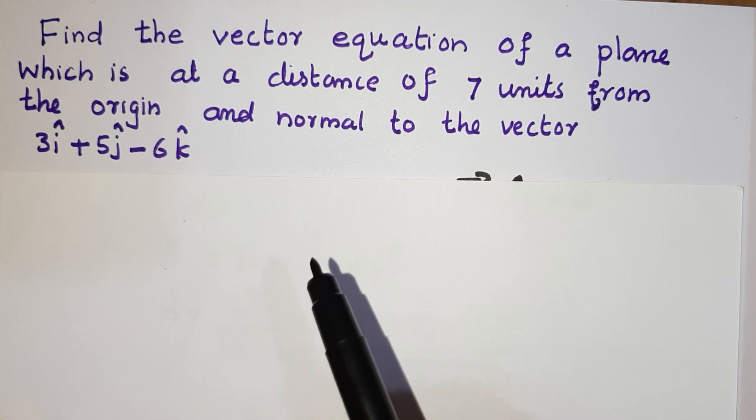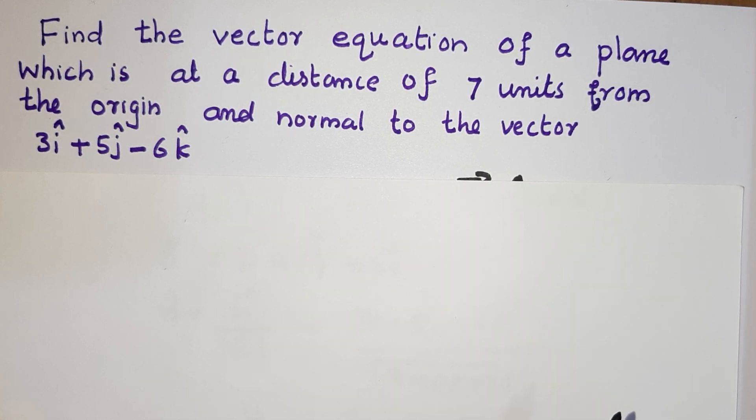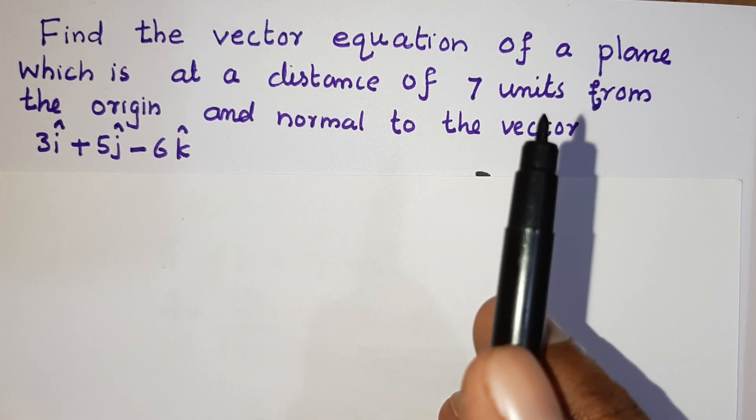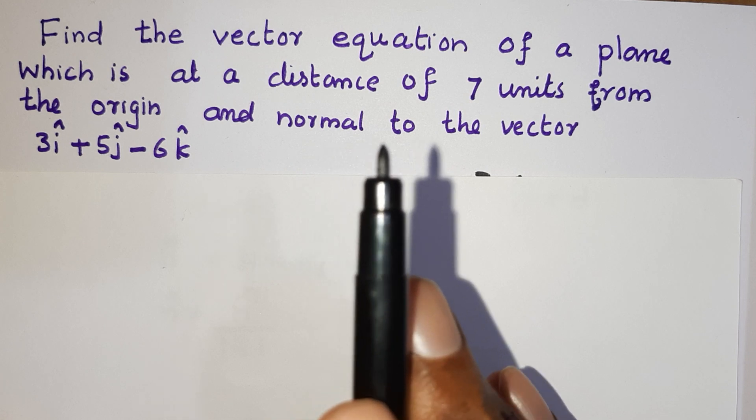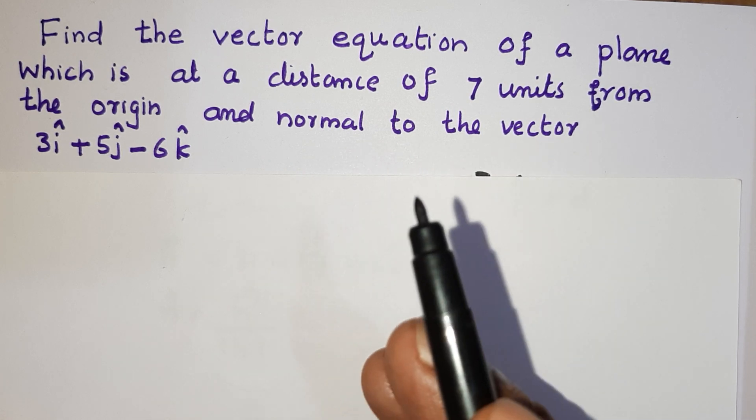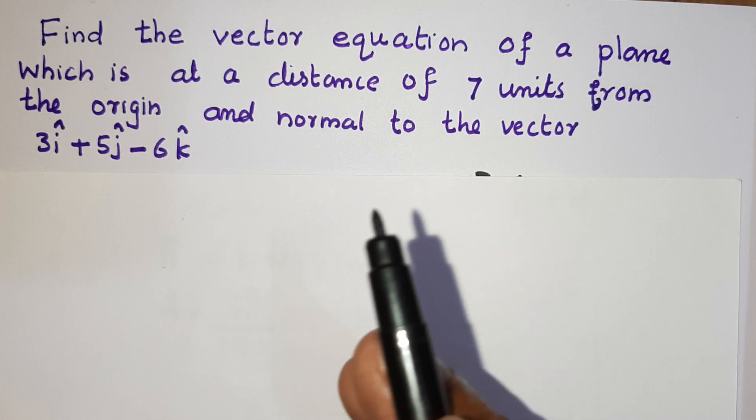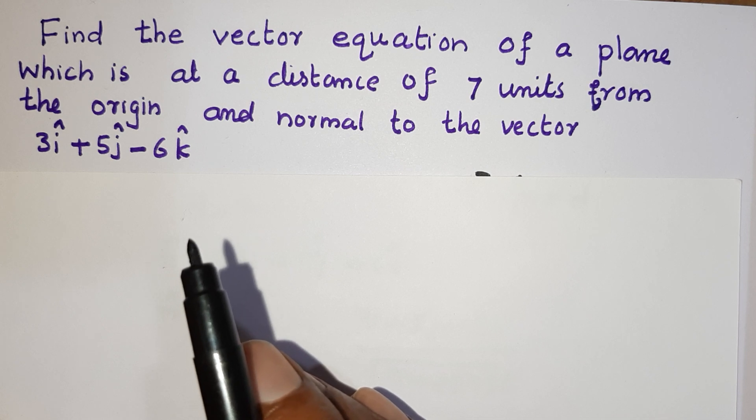If you have a problem: find the vector equation of a plane which is at a distance of 7 units from the origin and normal to the vector 3i plus 5j minus 6k.